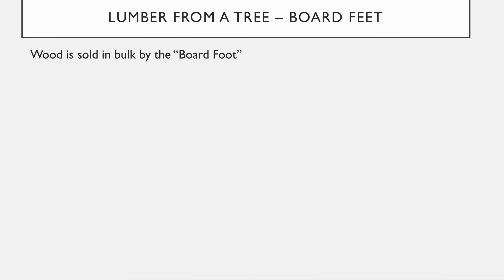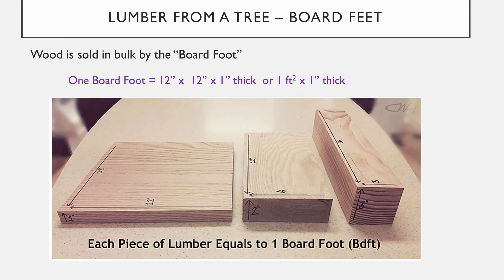To understand how much wood comes out of a tree, we need to understand the board foot. Wood is sold using this measurement, where a board foot is 12 inches by 12 inches by 1 inch thick — or 144 cubic inches. So a 12×6 inch board that's 2 inches thick is still a board foot, and a 3×3 inch board that's 16 inches long is also a board foot — all equal 144 cubic inches.